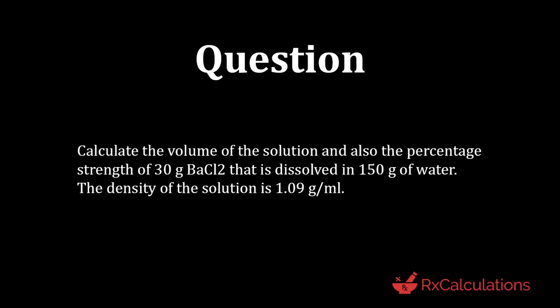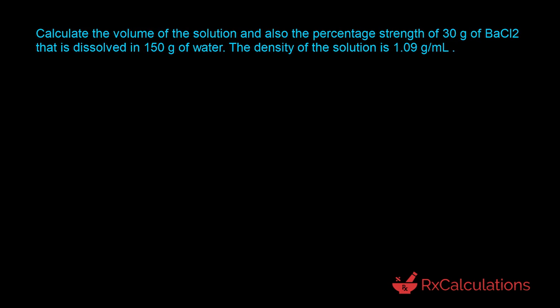Let's take a look at another question. Calculate the volume of the solution and the percentage strength of 30 grams of barium chloride dissolved in 150 grams of water, given that the density of the solution is 1.09 g/mL. The first goal is to determine the volume of the solution by finding the total weight and then using the density.